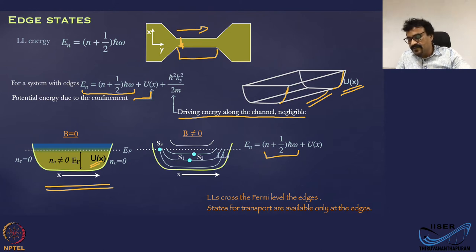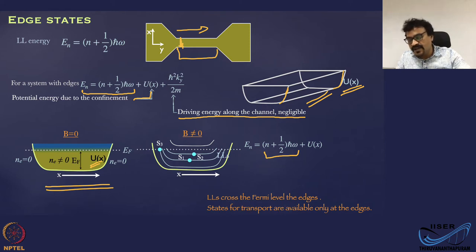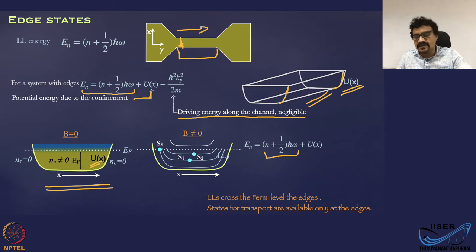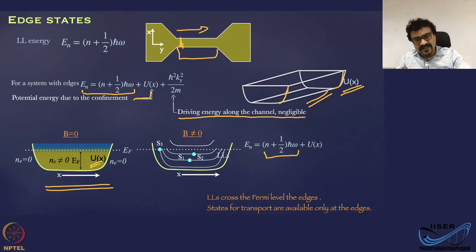Landau levels cross the Fermi level at the edges — this is the key message. These states are available only for transport, and transport happens only at the edge. So, the moment you apply a magnetic field, quantization takes over, and the Landau levels also acquire the edge potential. At the edge, Landau levels cross the Fermi level, but in the bulk they remain inside. You have states at the edge for transport and no states in the bulk — the bulk is insulating, and the edges are conducting.